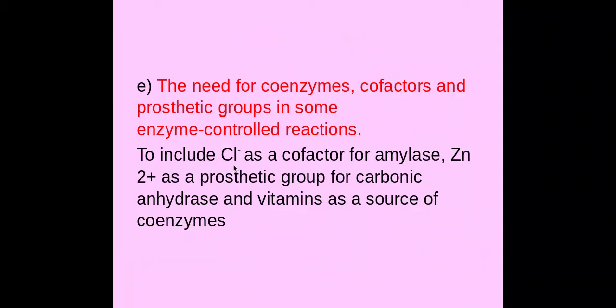There are specific examples you need to know: chlorine ion (Cl⁻) is a cofactor for amylase, and zinc ion (Zn²⁺) is a prosthetic group for carbonic anhydrase, which is used in the Bohr effect and Bohr shift. These — the chlorine ion and the zinc ion — are heavily used within multiple choice questions, so you need to be able to spot the correct option in multiple choice.